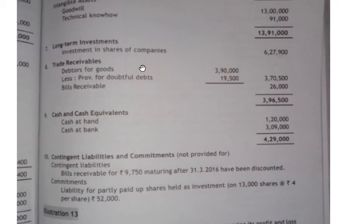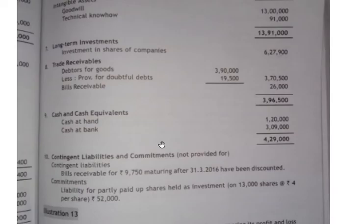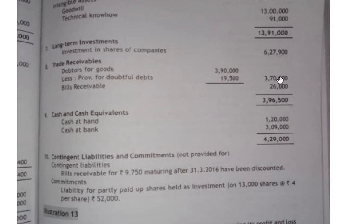Long-term investment working note: investment in shares of companies is six lakh twenty-seven thousand nine hundred. Trade receivables: debtors given in the question is three lakh ninety thousand, minus provision for doubtful debts of nineteen thousand five hundred, giving three lakh seventy thousand five hundred. Bills receivable is twenty-six thousand. Total trade receivables: three lakh ninety-six thousand five hundred.